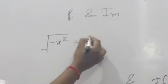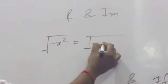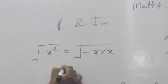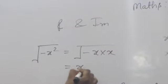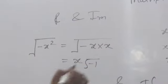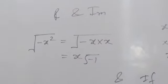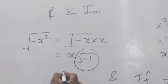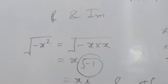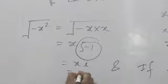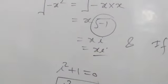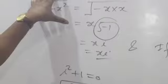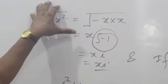Then we can write it as √(-1 × x²), which gives x × √(-1). Now there is x × i. It means this portion is the imaginary portion.